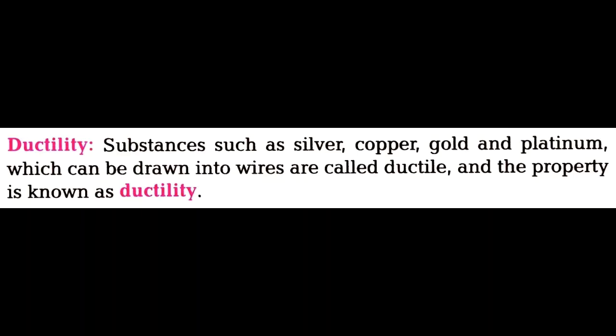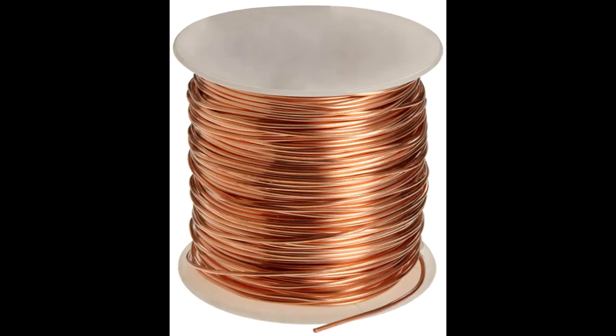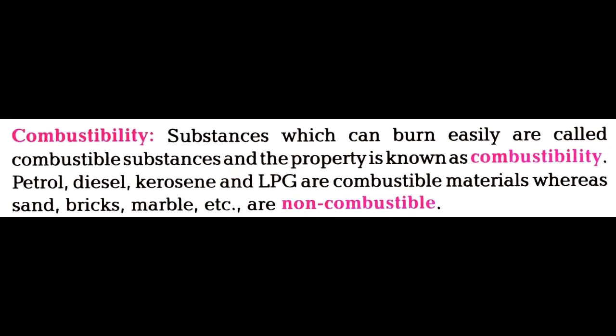Second, ductility: substances like silver, copper, gold, and platinum can be drawn — pulled on both sides simultaneously — so that they thin out into wire. Such substances are called ductile, and this property is known as ductility. Third, combustibility: some substances which burn easily and catch fire very quickly are called combustible substances. Petrol, diesel, kerosene, wax, candle, and LPG are all combustible materials, whereas sand, brick, and marble are non-combustible.